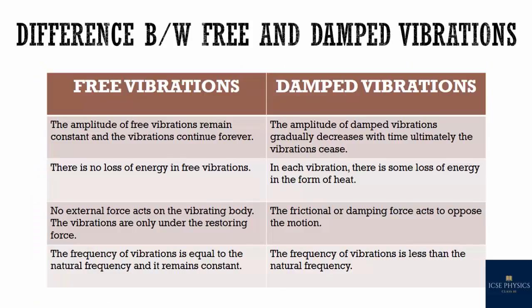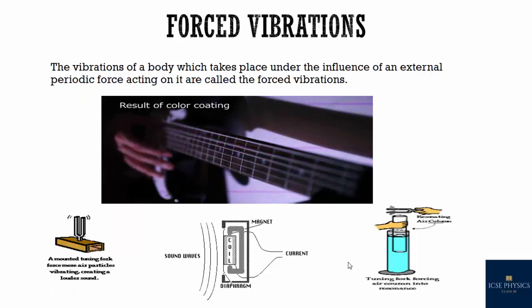Difference between free and damped vibration: in free vibration, the amplitude remains constant, whereas in damped vibration the amplitude decreases. There is no loss of energy in free vibration, but there is a loss of energy in damped vibration. No external force acts on the body in free vibration, while in damped vibration the frictional damping force opposes the motion. The frequency in free vibration equals the natural frequency and remains constant, whereas in damped vibration the frequency is always less than the natural frequency.